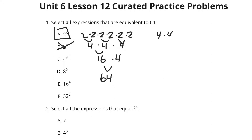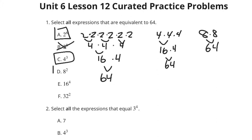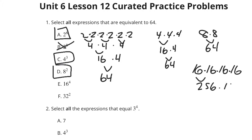What about 4 to the 3rd? Well, that would be 4 times 4 times 4, and 4 times 4 is 16 times 4, which looks familiar — it is 64. 8 squared is 8 times 8, which is 64. 16 to the 4th, that's 16 times 16 times 16 times 16, and just the first 16 times 16 is 256 — it's going to keep getting bigger, so that's not it. And 32 squared is 32 times 32, not 32 times 2. It's 32 times 32, which would be 1024, so that's not it either.